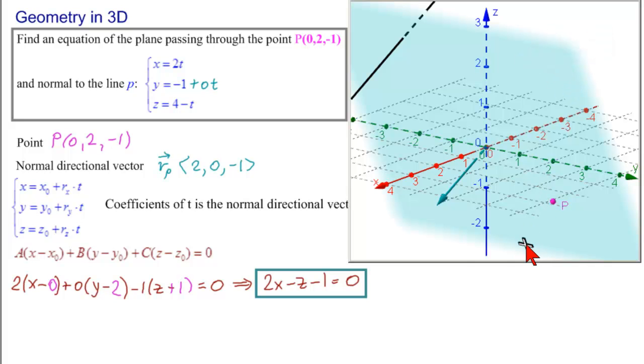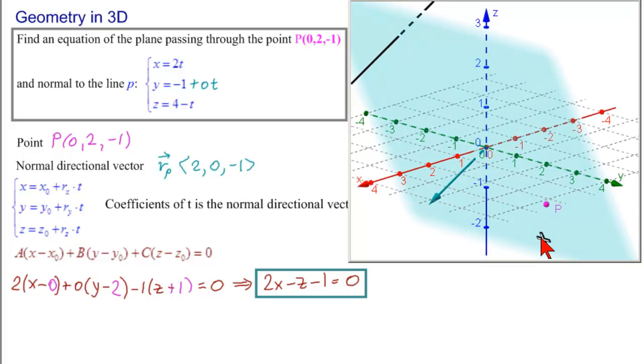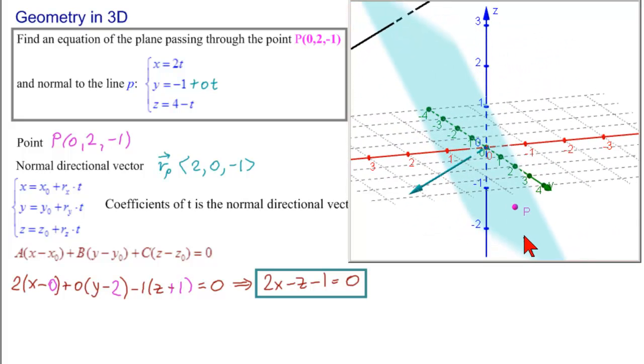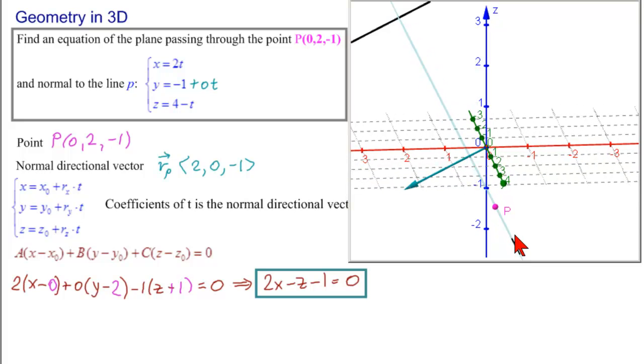So this is the plane 2x - z - 1. Let's see that it actually is normal to the line and to the directional vector. There we can see that it is indeed normal.